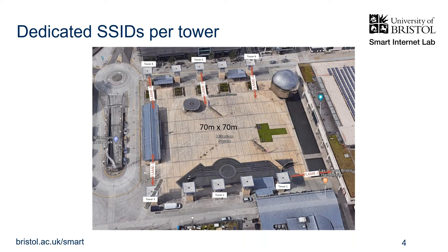This is a bird's-eye view of the square itself — dimensions are 70 by 70 meters. There are six towers but only five of them are going to be used in this campaign. If we have to test remotely, similar to Barcelona, there will be emulated UEs running on these towers and the experiment can be done remotely. Each WiFi access point radiates its own unique SSID, and based on your requirements we can switch on or off any number of these access points to serve your purpose.